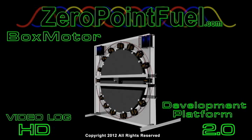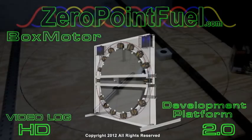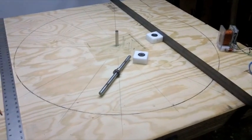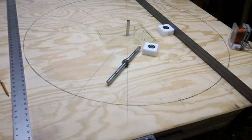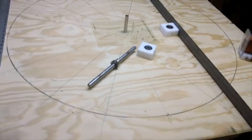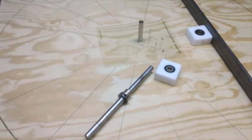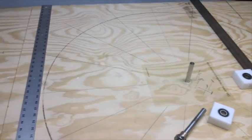This is Technomancer for Zero Point Fuel. I wanted to give everybody a look at what will be the box motor. I'm building three of these motors this size. It's four foot square and the wheel is thirty nine and a half inches.